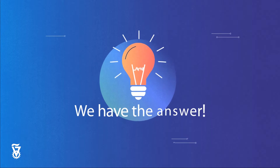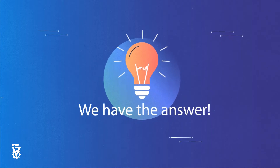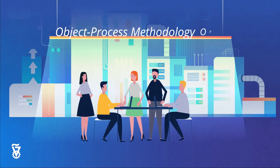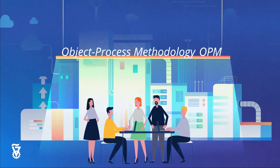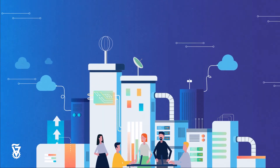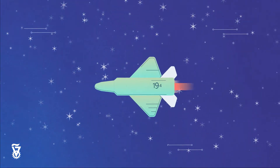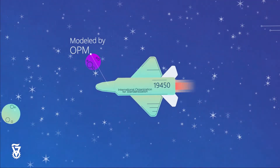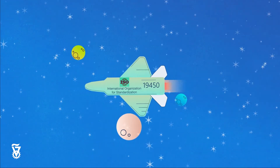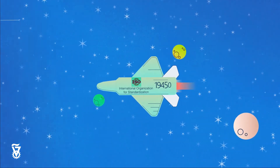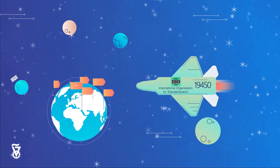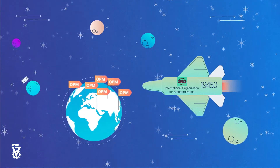However, we have the answer. Object Process Methodology, OPM, helps you and your team model complex systems in a simple yet powerful way. OPM is recognized by the International Organization for Standardization, ISO-19450. That is why global companies use OPM as part of their systems engineering process.